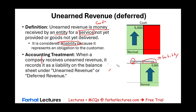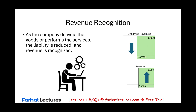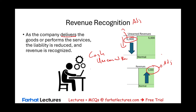When a company receives unearned revenue, it records it as a liability on the balance sheet. For example, if we received $5,000 cash, cash goes up and unearned revenue — or deferred revenue — goes up. That's how we establish unearned revenue. Eventually, as the company delivers the goods or performs the service, the liability is reduced and revenue is recognized. We debit unearned revenue and credit revenue. So it starts as a liability: debit cash, credit unearned revenue — then as it's earned, debit unearned revenue, credit revenue.